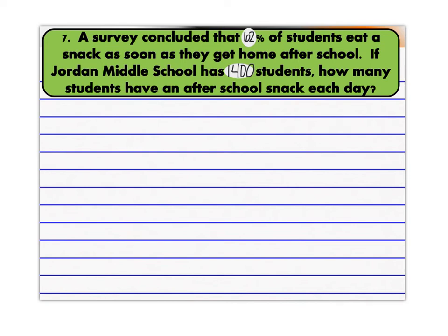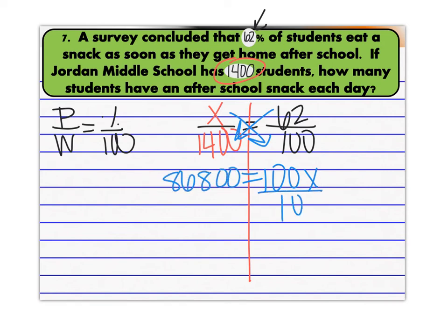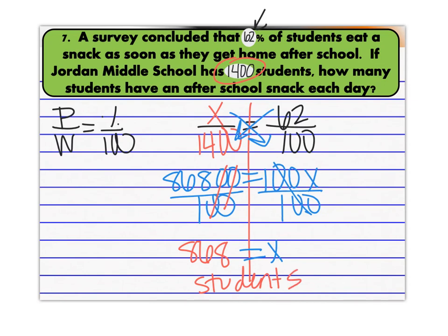Number seven: a survey concluded that 62% of students eat a snack as soon as they get home after school. If Jordan Middle School has 1,400 students, how many students have an after-school snack each day? This is a prediction, set up as a proportion: part over whole equals percent over 100. So 62 over 100 equals X over 1,400. Cross multiplying: 100X = 62 × 1,400 = 86,800. Divide each side by 100 — reducing the two zeros — gives 868 students come home every day and eat a snack.